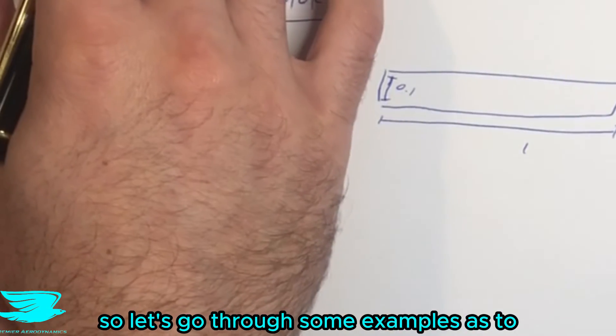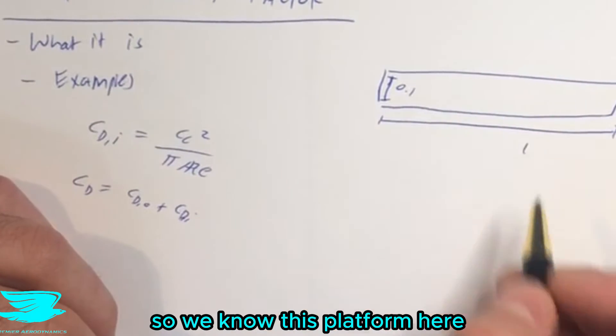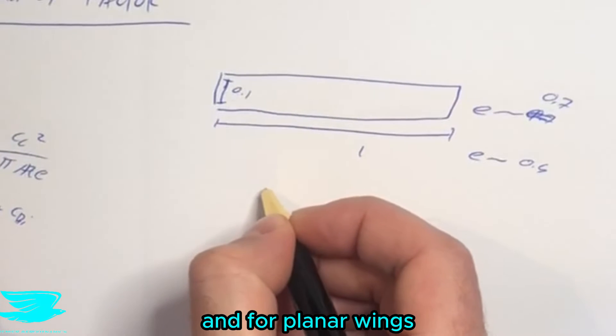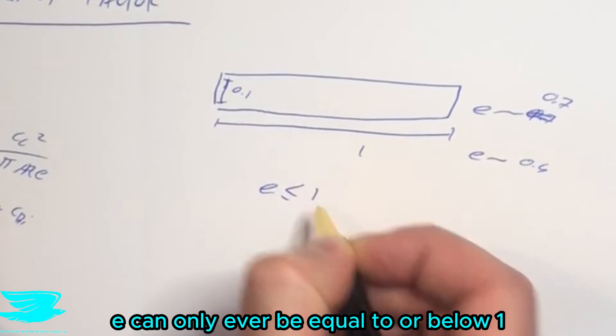So let's go through some examples as to what some planforms are in terms of their E factor. So we know this planform here, and this is called a planar wing. And for planar wings, E can only ever be equal to or below one.